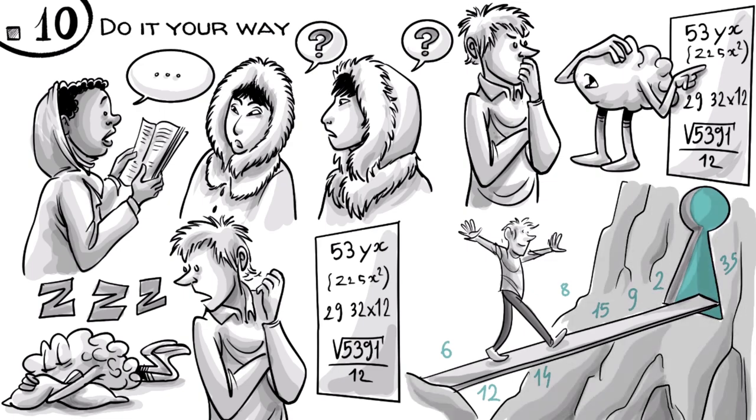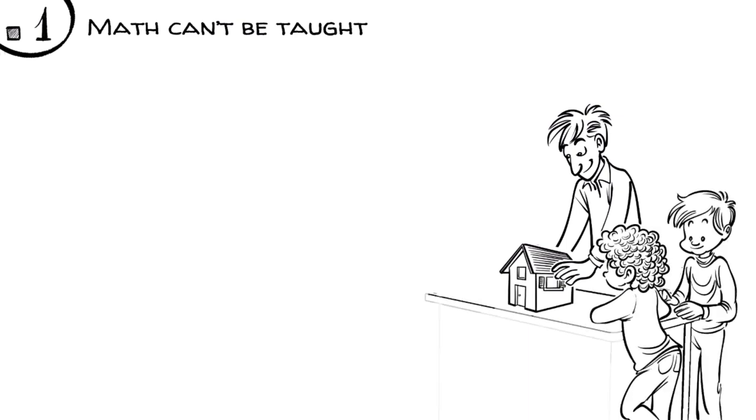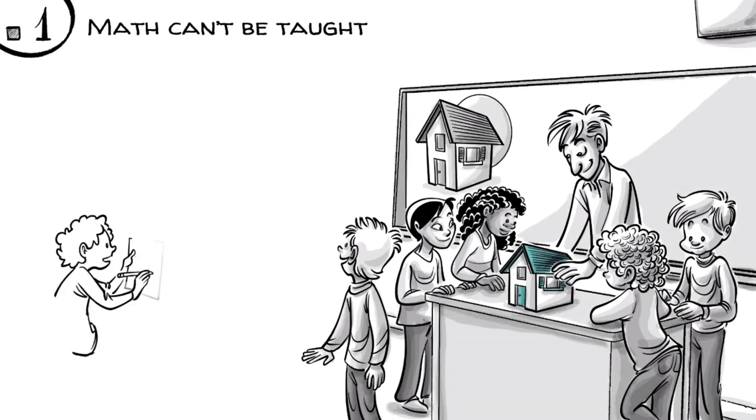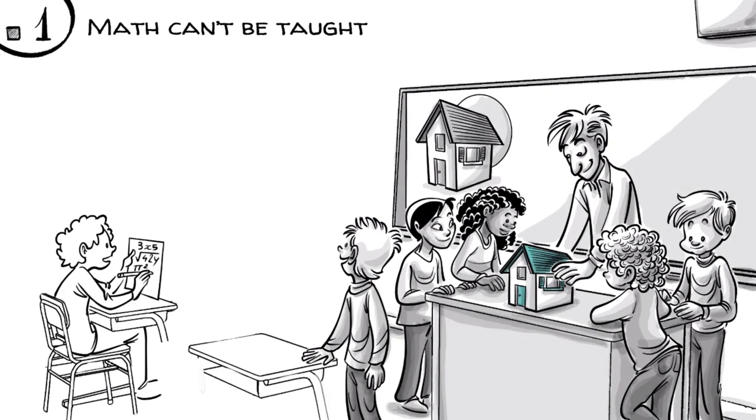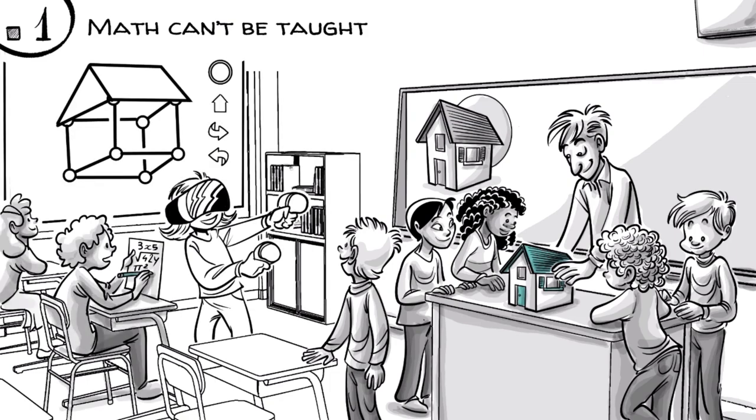Which brings us back to rule one. Math can't be taught, it has to be constructed. If we want to learn math, we have to do math in our heads, ideally with real-life experiences. Later, we replace the objects with abstractions such as language, symbols or whatever the future might bring.